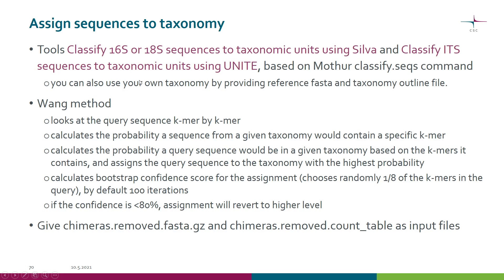These tools use the Wang method, which is a Bayesian probabilistic method. It starts by looking at the query sequence k-mer by k-mer, and calculates the probability that a sequence from a given taxonomy would contain a specific k-mer.